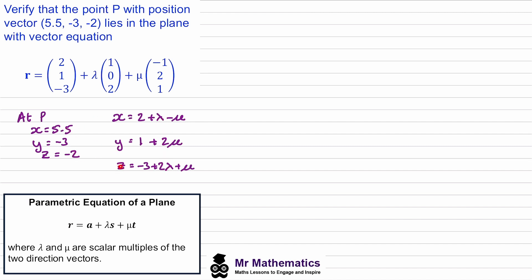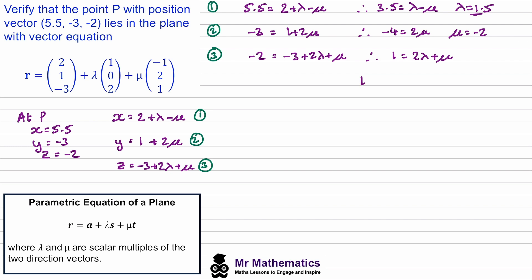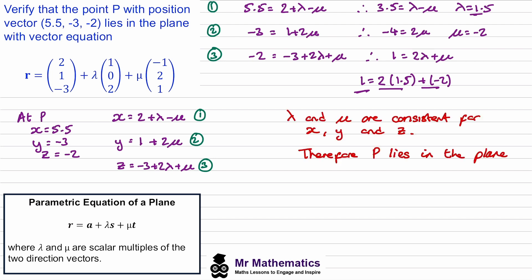We substitute the known values into our general equations and tidy up by moving constants to the left-hand side. We solve for lambda and mu from equations one and two, then substitute them into equation three. From equation two, mu equals negative two. Substituting into equation one, lambda equals 1.5. Substituting both into equation three: two lots of lambda plus mu gives three minus two, which equals one. Lambda and mu are consistent across x, y, and z — therefore p lies in the plane.